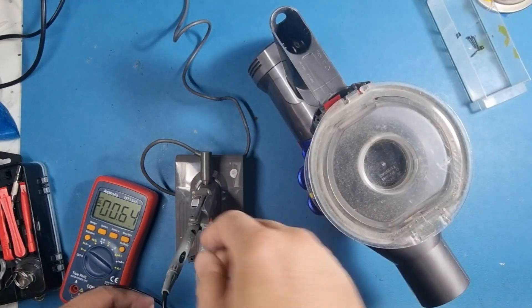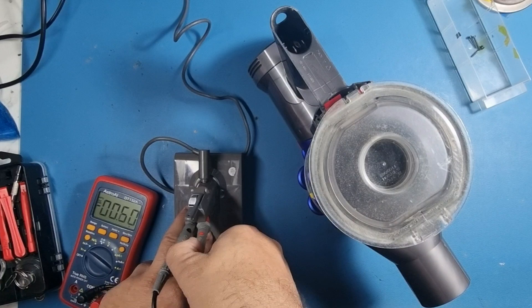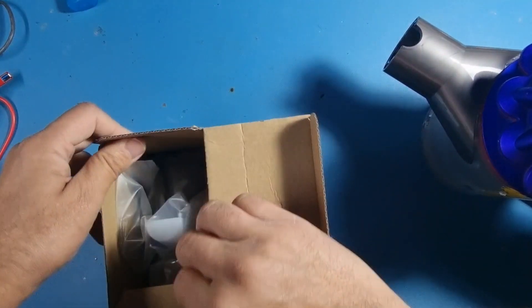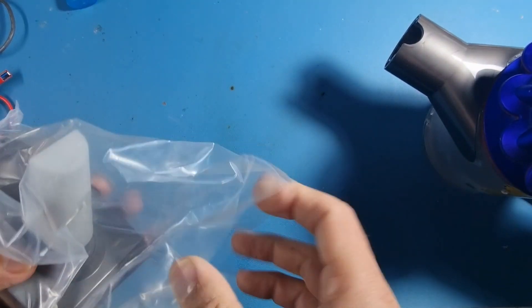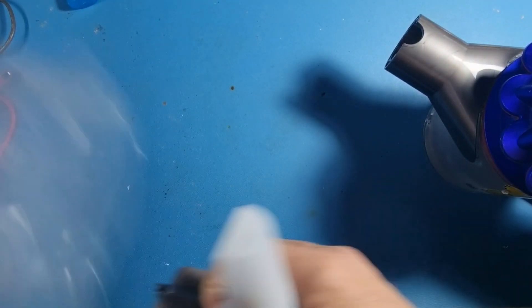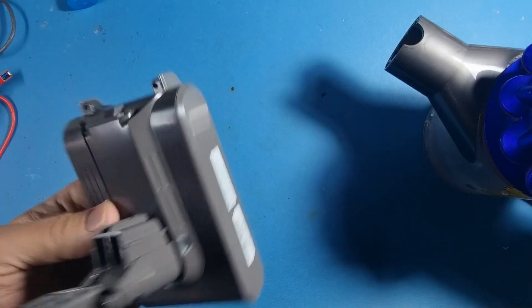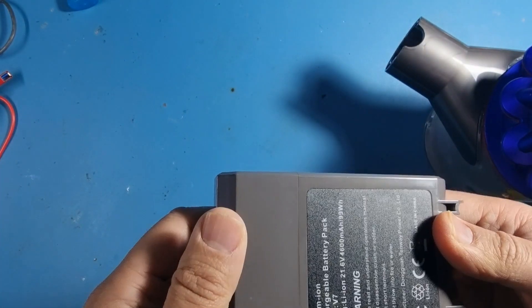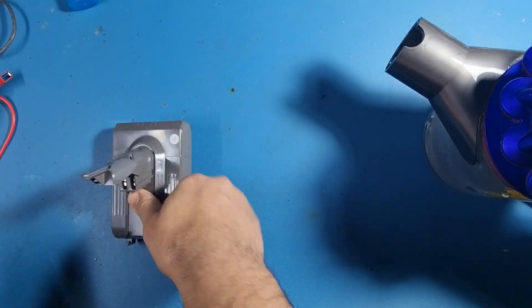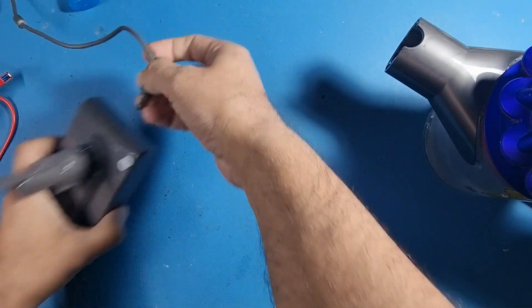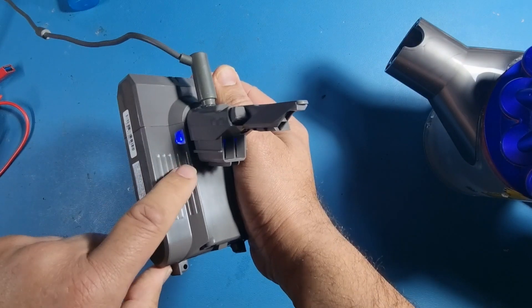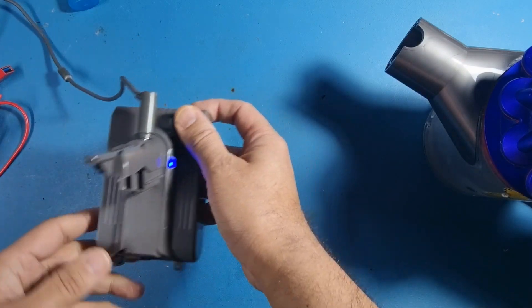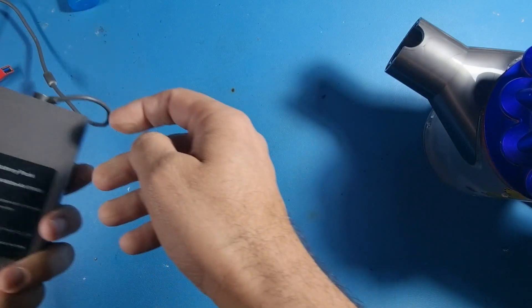All right then guys, so the new battery has arrived. Let's just take it out of the box. I'm going to plug it in first into the charger, and as you can see the lights are already coming on. So I think this battery will be exactly what we need to get this vacuum working again.